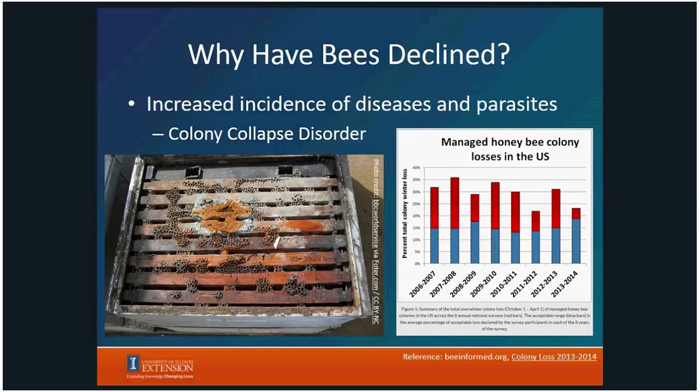In this chart, the blue bar represents what beekeepers consider an acceptable loss over the course of the winter due to cold or other pressures, and the red bar above shows what actual losses have been. Beekeepers in the United States lost over 30% of their colonies. In the last year shown, the expected tolerated loss went up and actual losses were a little down, so they're starting to come closer together — though who knows how that trend will continue.